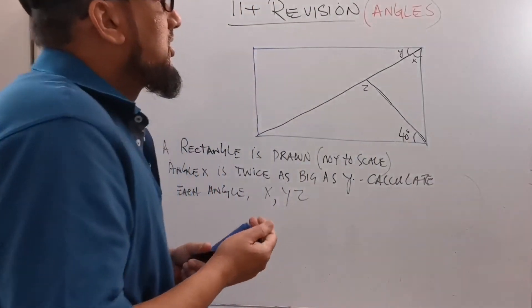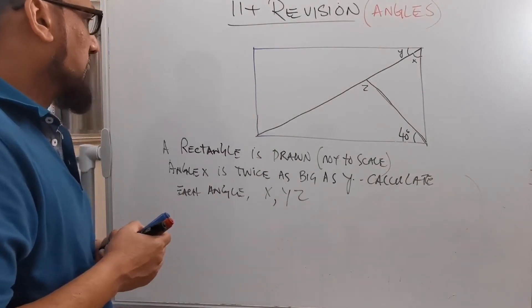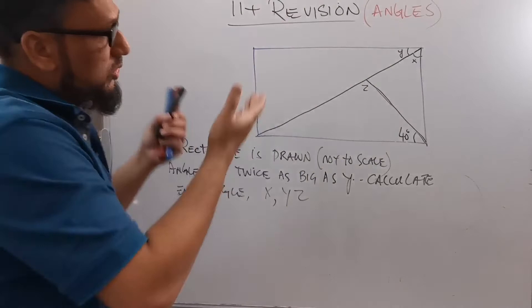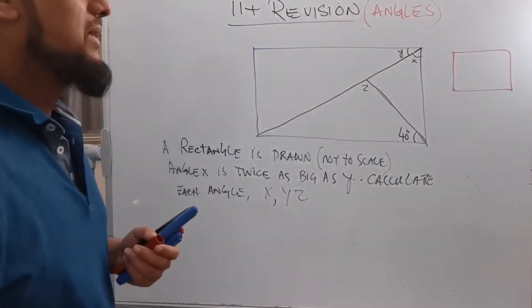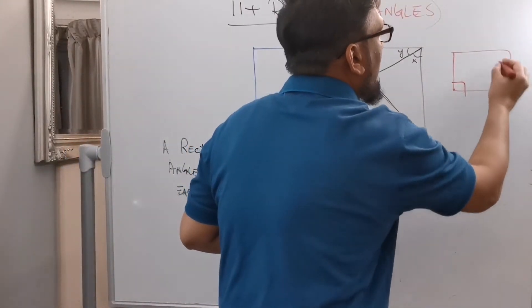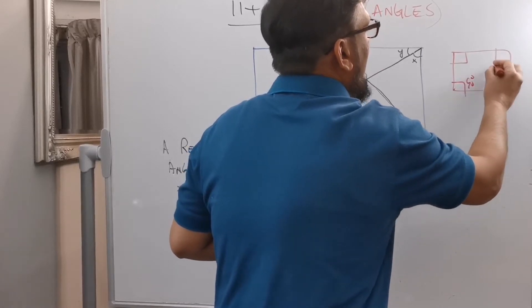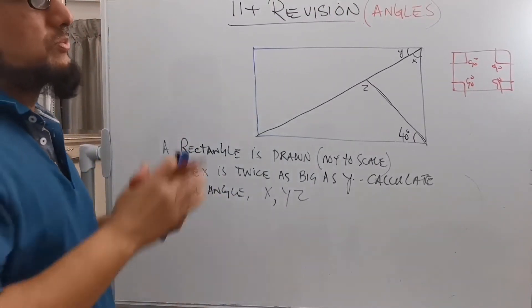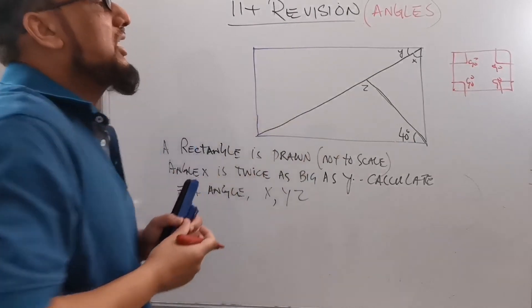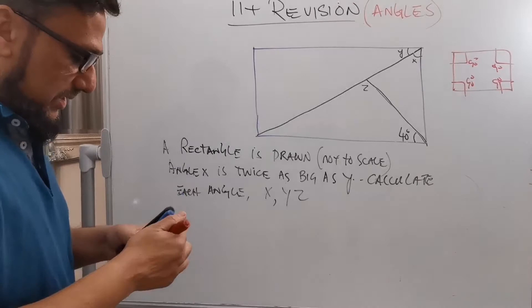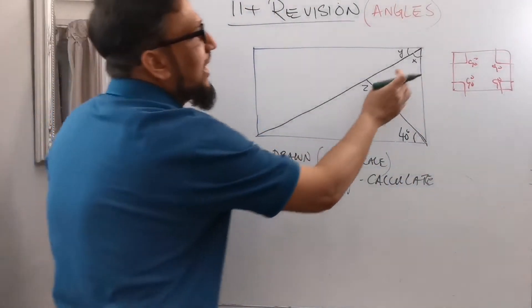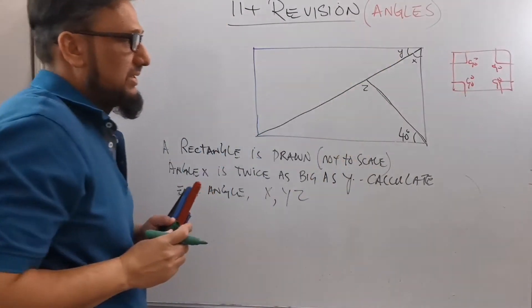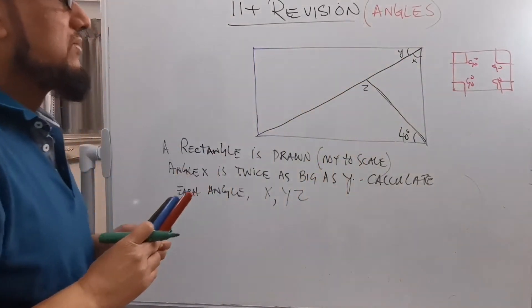The question asks you to find angles x, y, and z. This is a rectangle. We know the property of a rectangle: it is a 2D shape with four sides, two opposite sides are equal, and it has four angles each equal to 90 degrees. They draw a diagonal line and also form a triangle. This is the value of x, this is y, and this is z — three missing angles we need to find.